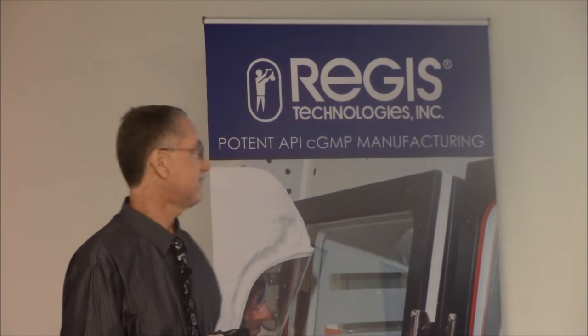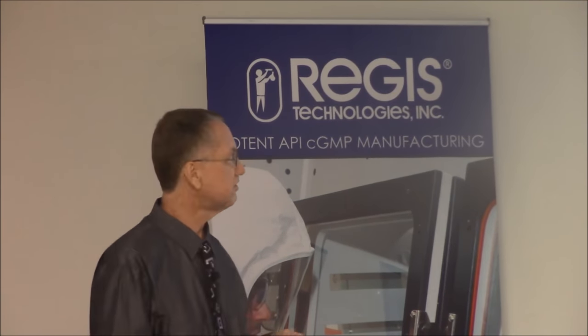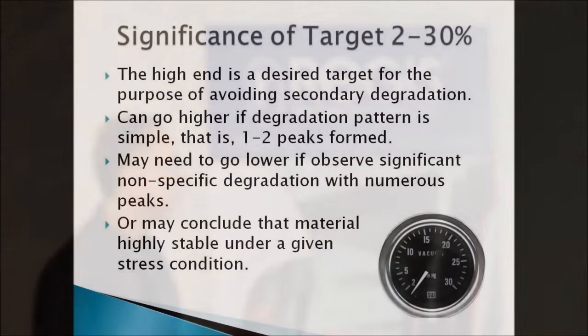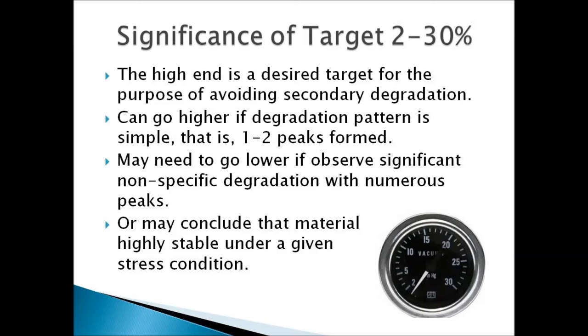The significance of having a 2 to 30% target — it's not written in stone, just a good approximation of how much you want to degrade your material when you subsequently use that sample for method development. You can go higher if the degradation pattern is simple, such as if just one or two peaks are formed, or you might need to go lower if you're finding a lot of little peaks due to nonspecific degradation. You might also conclude that a material is so stable under a given stress condition that you can't really attain that target, but you tried as hard as you could.